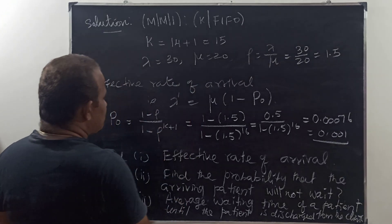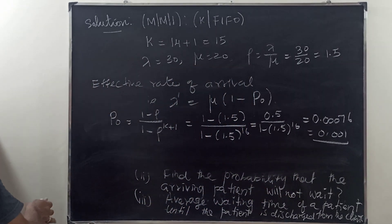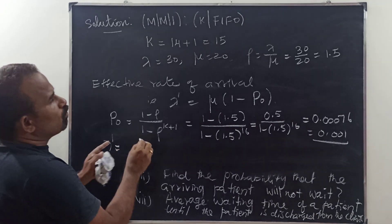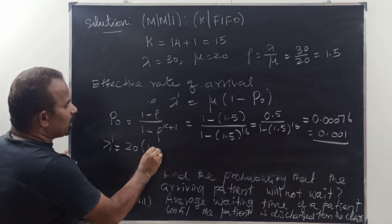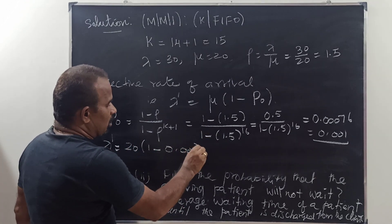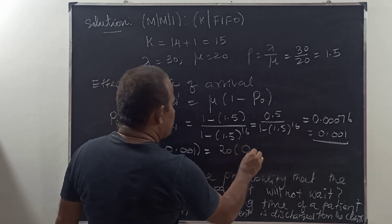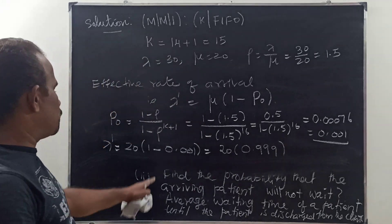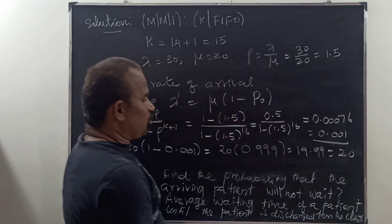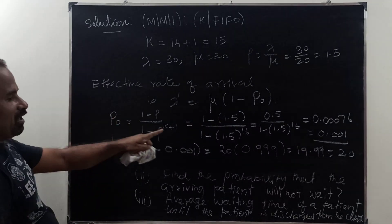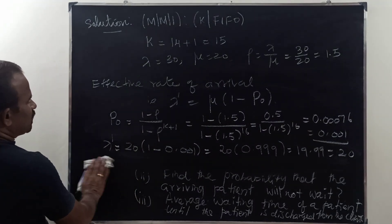Therefore, the effective rate of arrival: lambda-dash = mu times (1 minus P0) = 20 times (1 minus 0.001) = 20 times 0.999 = 19.99, which is approximately 20. Therefore, lambda-dash is equal to 20. The answer for the first question is 20.